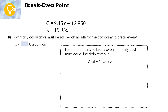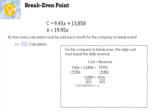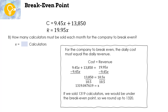How many calculators must be sold each month for the company to break even? For the company to break even, cost must equal revenue. Set the cost equation equal to revenue: 9.45x + 13,850 = 19.95x. Subtract 9.45x from both sides, then divide by 10.50. This gives approximately 1,319.047619 calculators. Since we can't sell part of a calculator, and selling 1,319 would be under the break even point, we round up to 1,320 calculators.